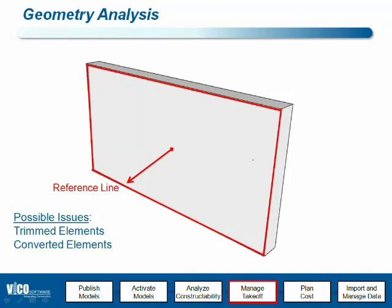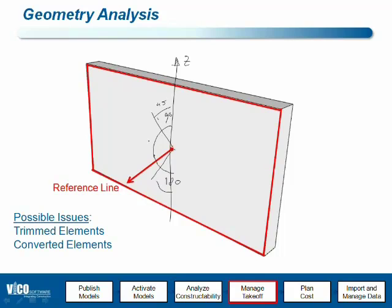Here we are with the reference side surface area. Just as with slabs, we determine the angle with the project's normal vector, which is the vector that points in the z direction. We say everything in the range from roughly 45° to 180° is considered vertical.